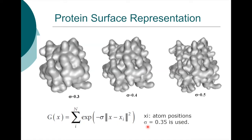The protein surface is represented by a Gaussian distribution around each atom X_i, where i is each atom on the protein. The surface is generated by the sum of these three-dimensional Gaussian distributions generated from each atom.